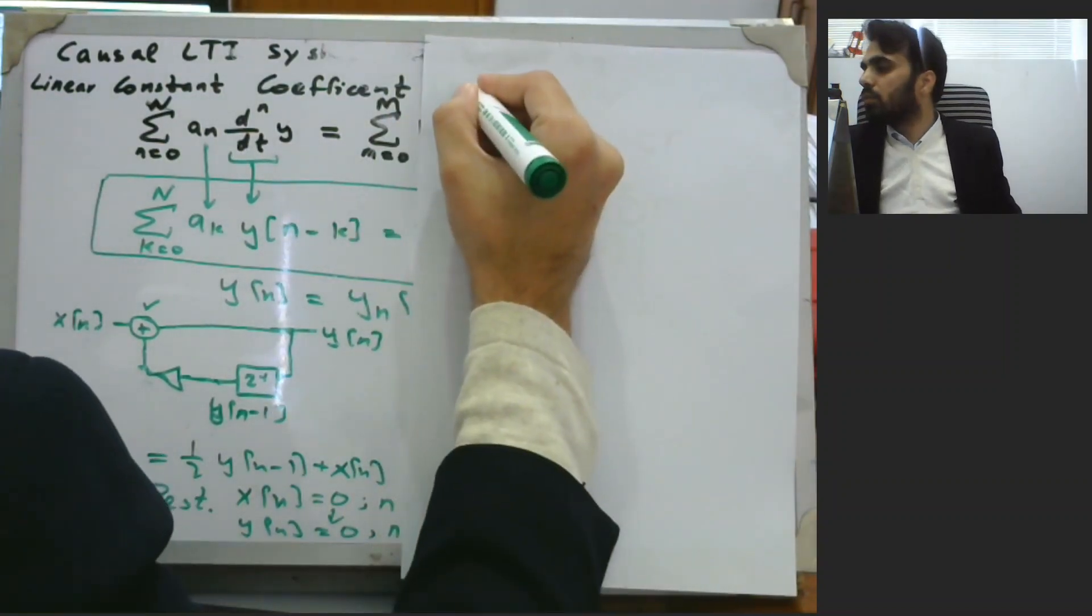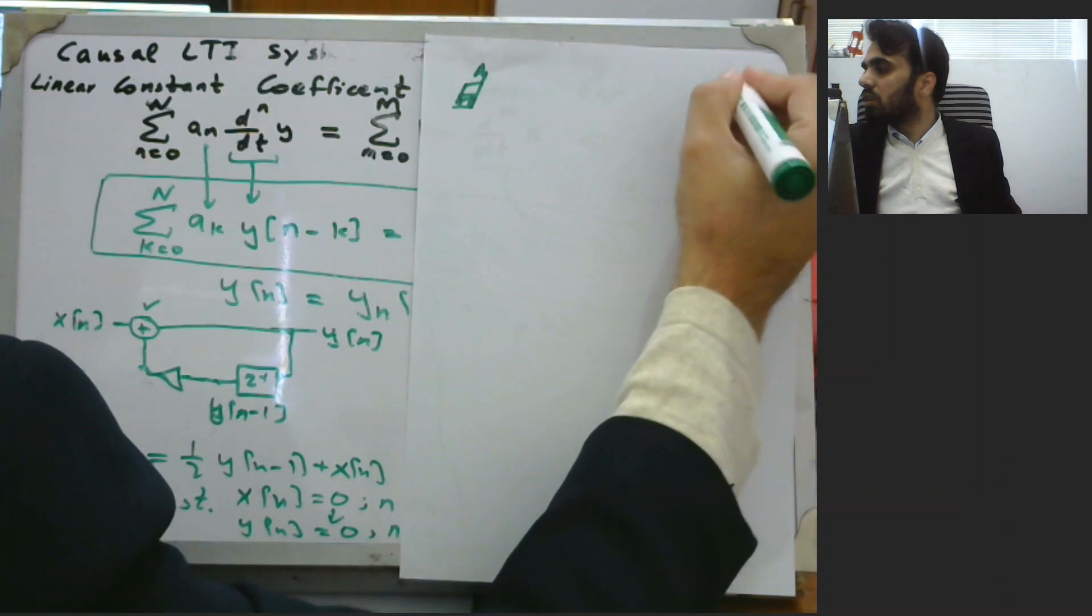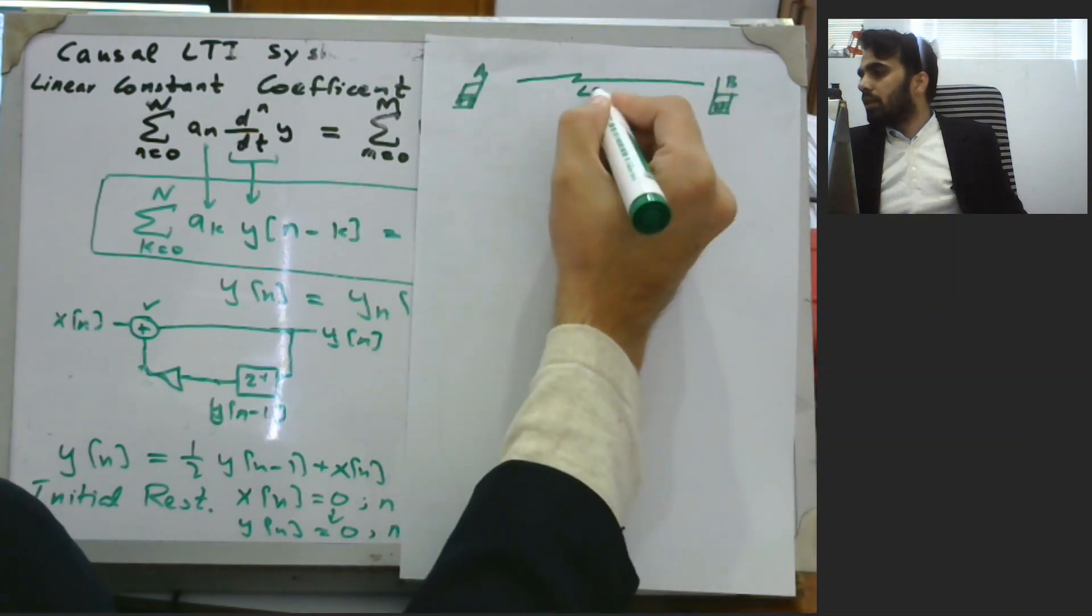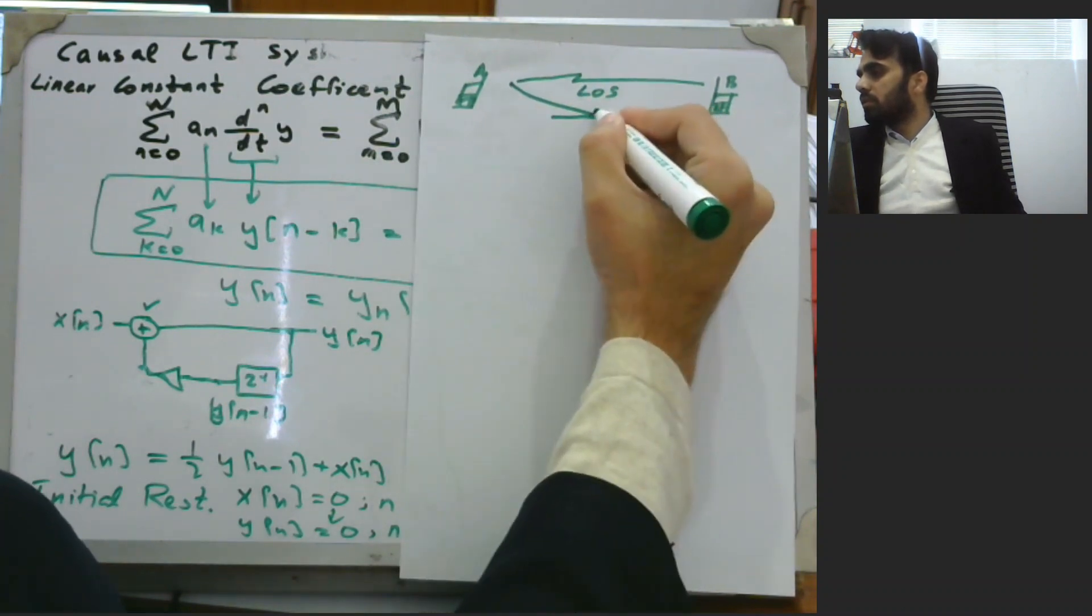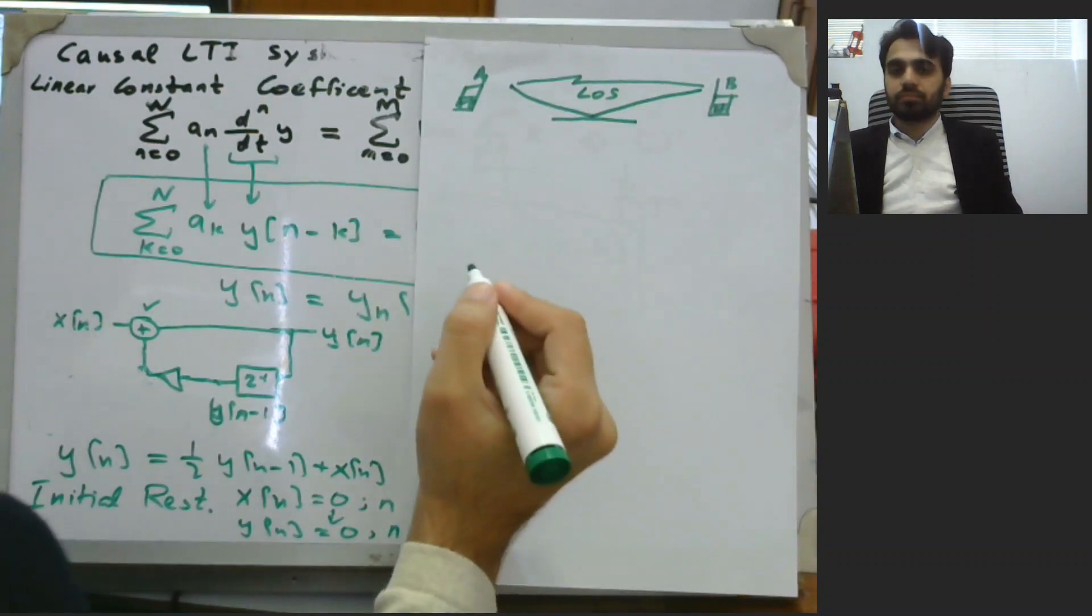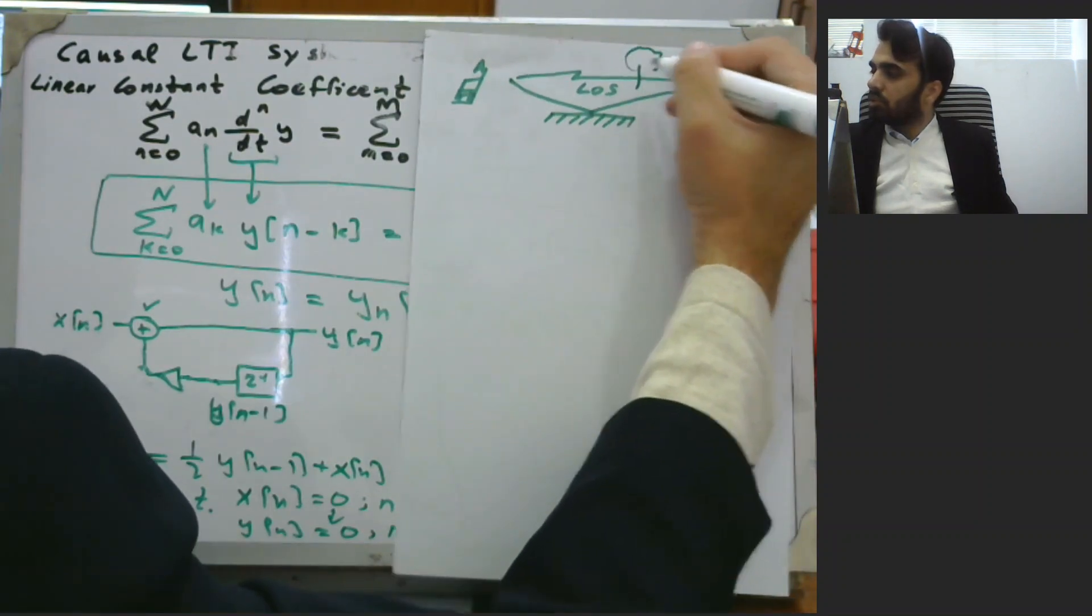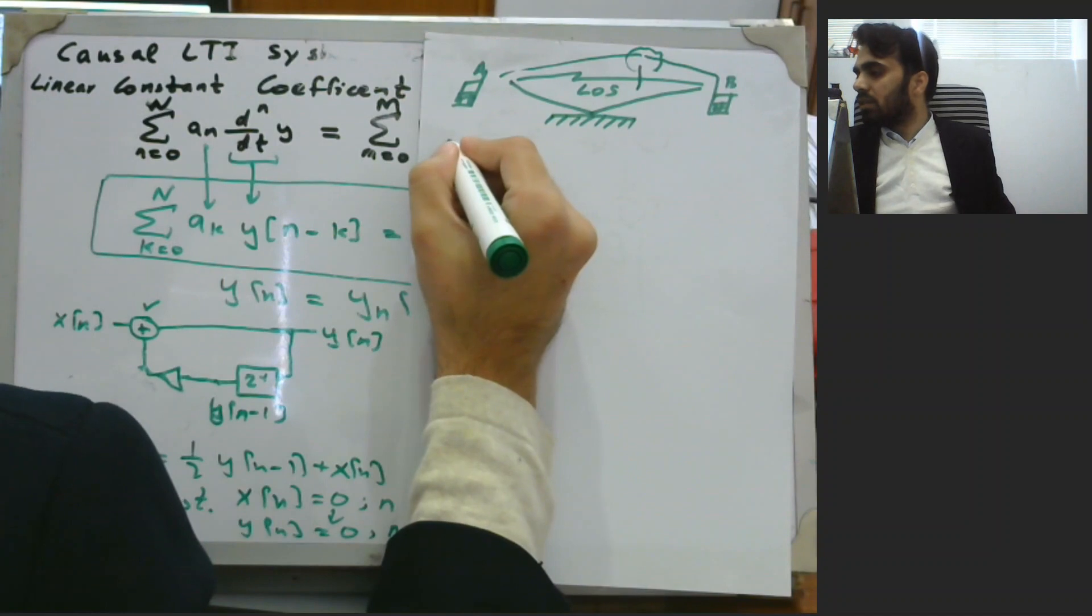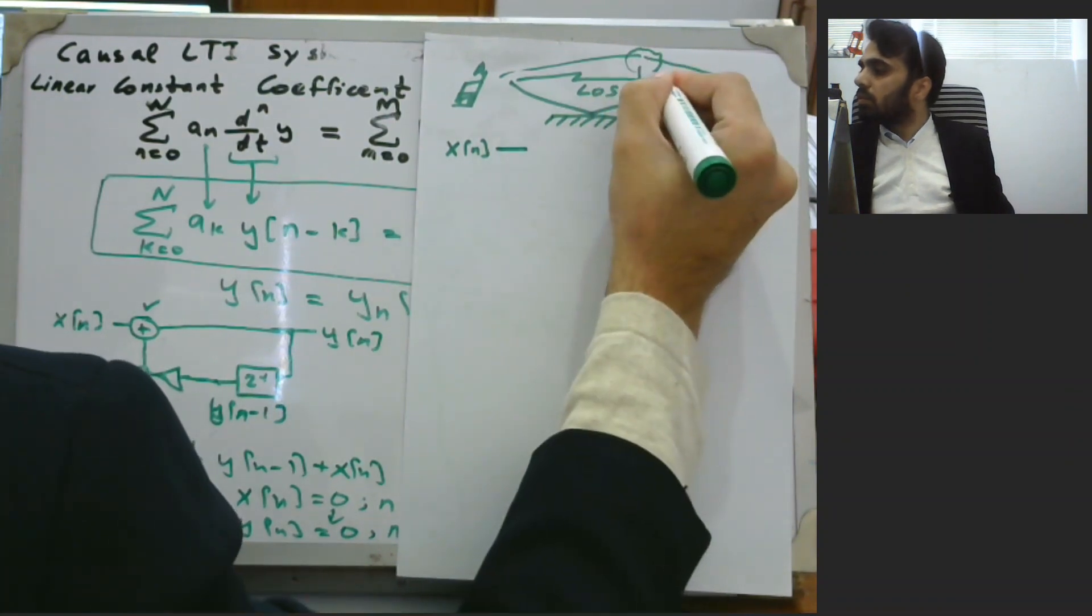Let us look into one more example. We have mobile station A, and this is communicating with mobile station B. We will have one line of sight path, and some reflection from buildings or trees. So we have three different paths. We can say that we have an input x, and this x is multiplied with a coefficient b_0.